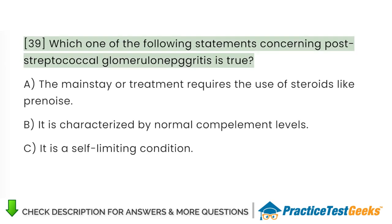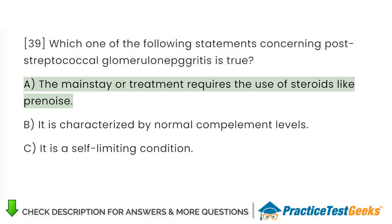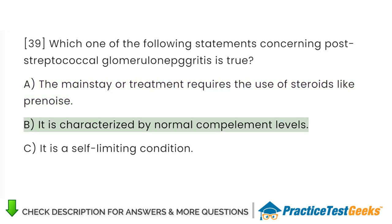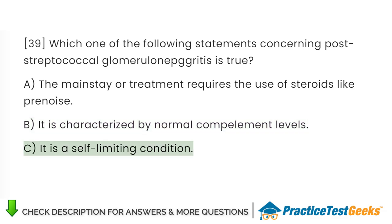Which one of the following statements concerning post-streptococcal glomerulonephritis is true? A. The mainstay of treatment requires the use of steroids like prednisone. B. It is characterized by normal complement levels. C. It is a self-limiting condition.